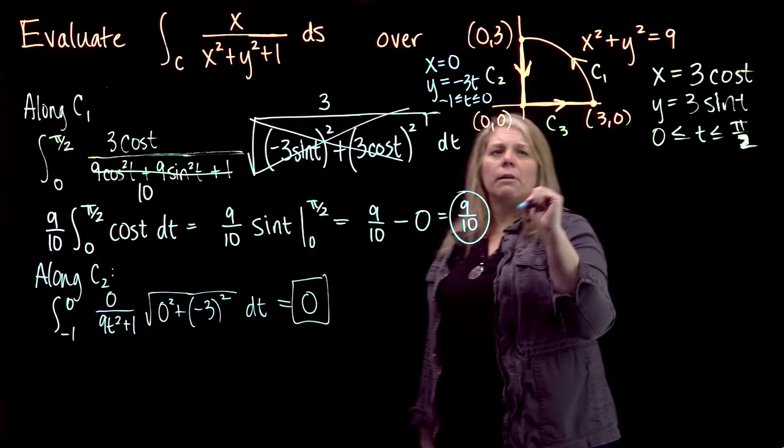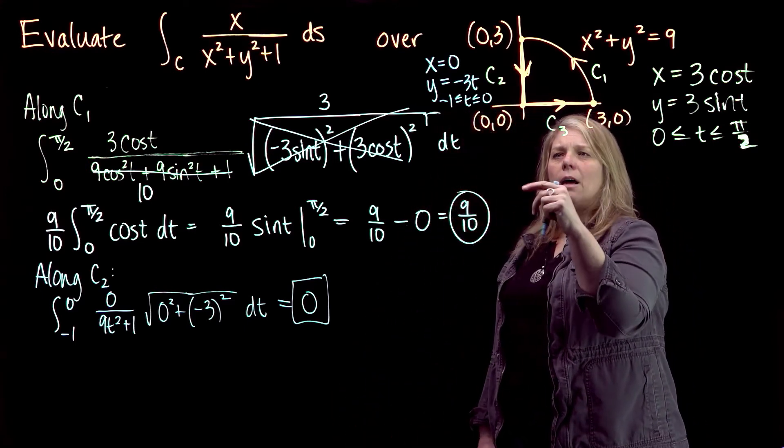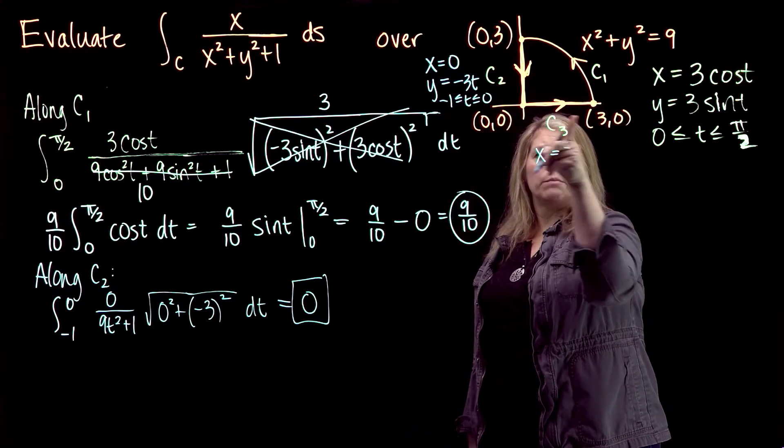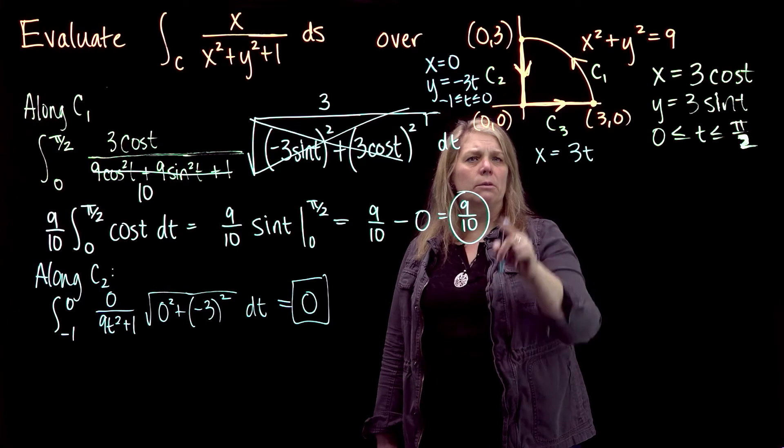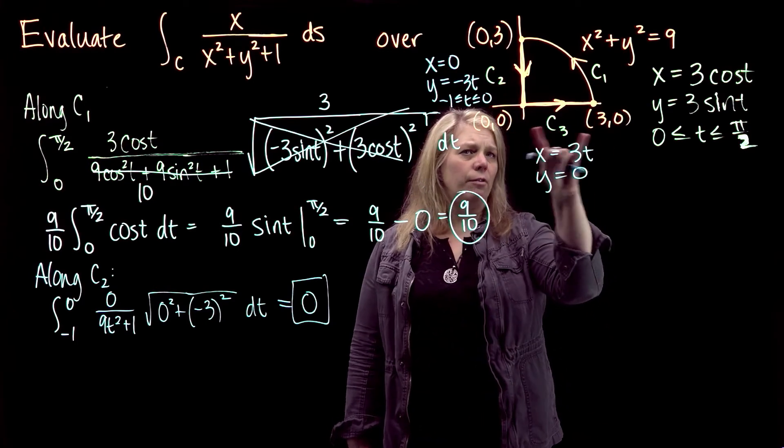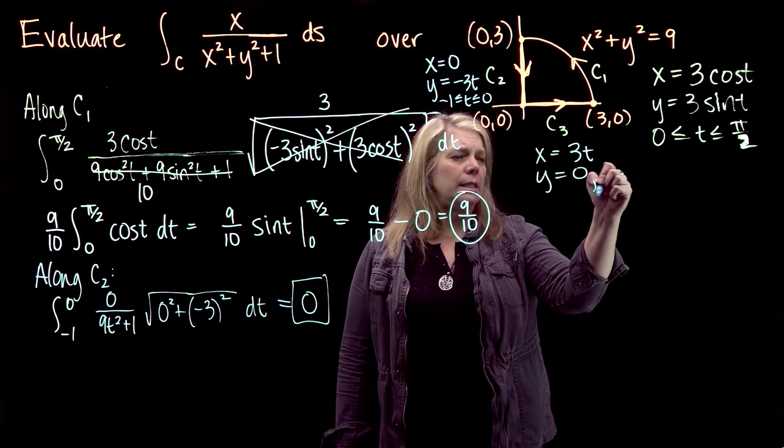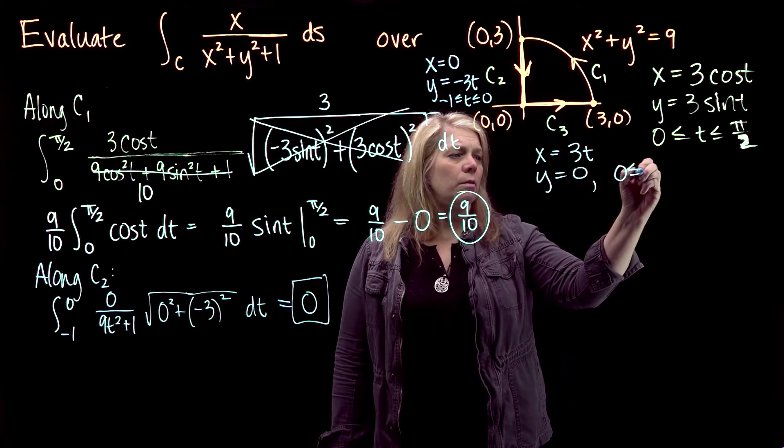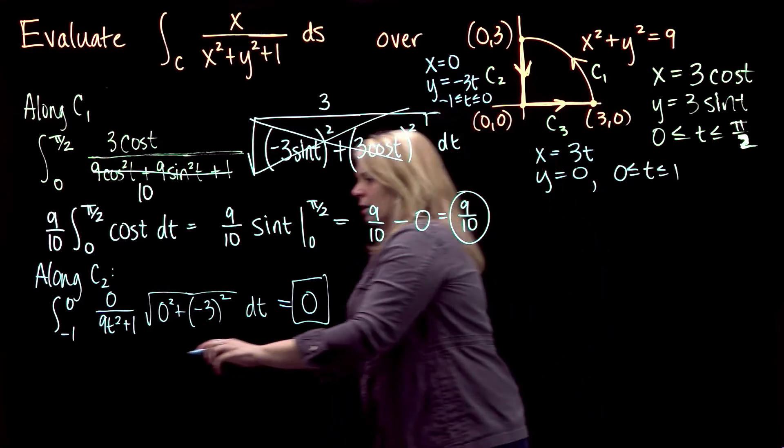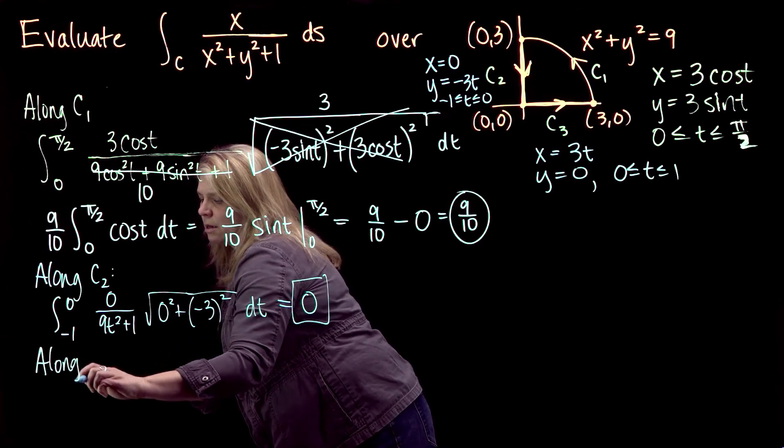Along C3, we're not going to have quite as nice of a simplification. Along C3, x increases from 0 to 3. I'm going to use x equals 3t and y stays 0. I need an interval for my t that will take me from (0,0) to (3,0). My t values will go from 0 to 1 along C3.